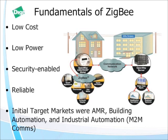So what is ZigBee? ZigBee is a low-cost, low-power, security-enabled, and reliable wireless networking technology. It came together as a standard from a variety of different folks involved in the automated meter reading market, building automation, and industrial automation, where people wanted to make their devices speak together in the wireless domain.